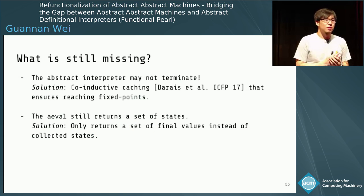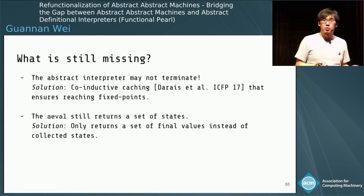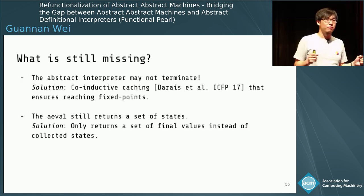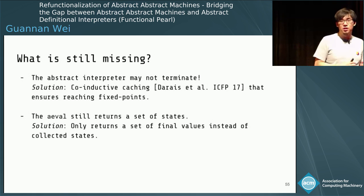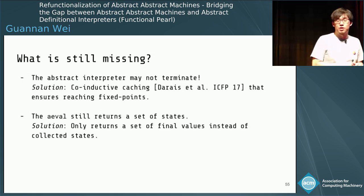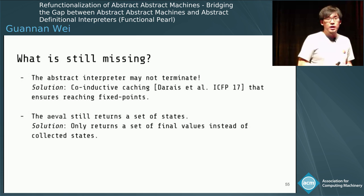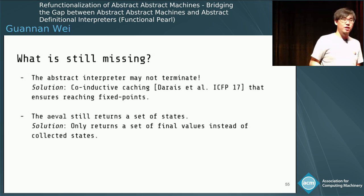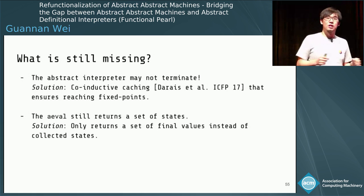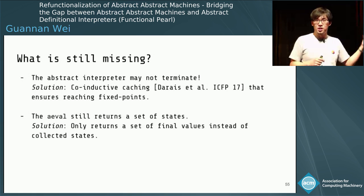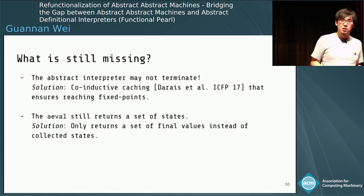Our abstract interpreter may still not terminate in some cases, because we use a pushdown model for both continuations and simply enumerating possible states is not sufficient. But we can apply co-inductive caching as shown in the original abstracting definitional interpreters, which easily solves this problem. Additionally, our aEval function returns a set of states using a state representation, but we can lift the fields of the state definition into arguments of aEval and have it return a set of final possible values instead.